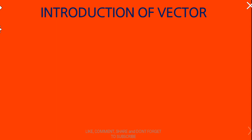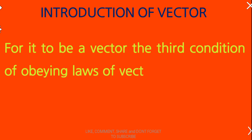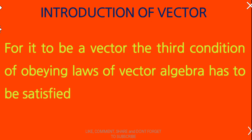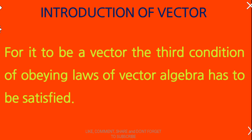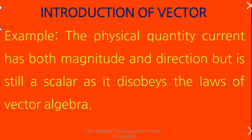When can you say any physical quantity is a vector? The third condition — obeying laws of vector algebra — has to be satisfied. Any physical quantity is said to be a vector only when it obeys the laws of vector algebra; otherwise, we cannot call it a vector. For example, electric current is a physical quantity that has both magnitude and direction, but it is still scalar as it disobeys the laws of vector algebra.